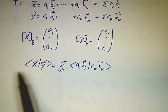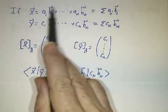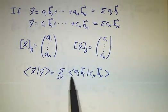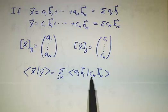If you want to take the inner product of these, you have to take the inner product of this sum with this sum. That gives you a sum of terms, and each term is a_j times the inner product of b_j with c_k times b_k.